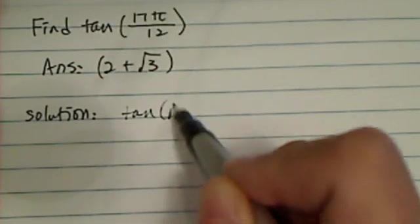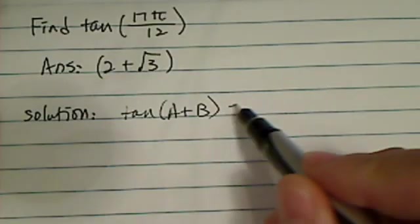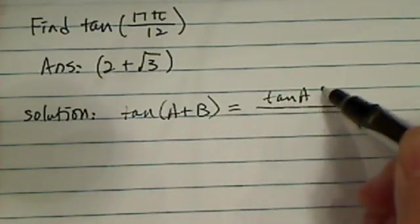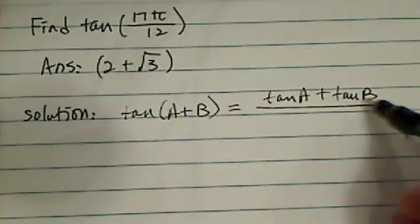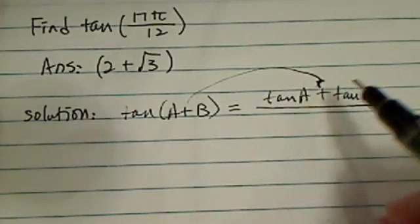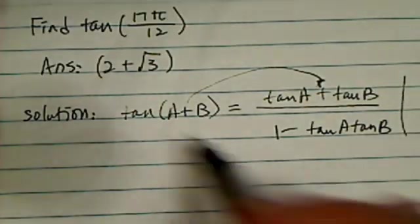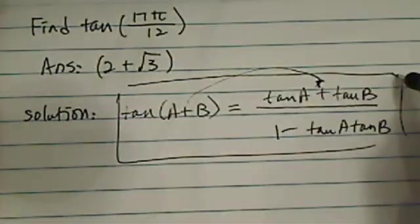The first one you need to know is tangent of a plus b. This is a little bit on the messy side, so tangent of a plus tangent of b, so the sign follows, and on the bottom is 1 minus tangent a times tangent b. That's the first piece of knowledge you need.